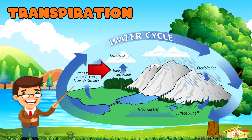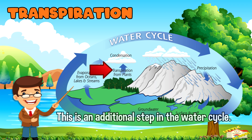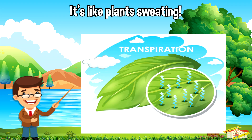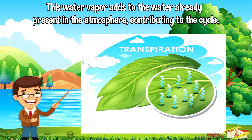Transpiration. This is an additional step in the water cycle. Transpiration is the process by which plants release water vapor from their leaves into the atmosphere — it's like plants sweating. This water vapor adds to the water already present in the atmosphere, contributing to the cycle.